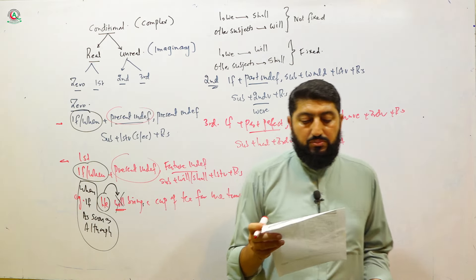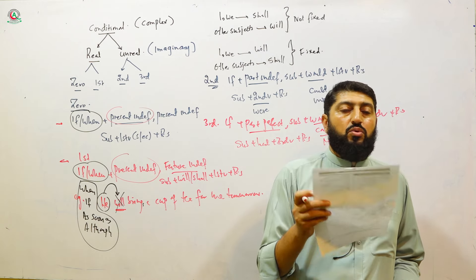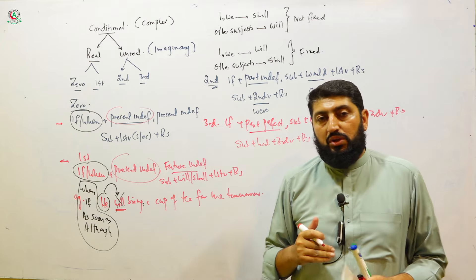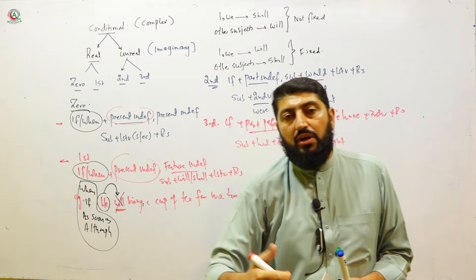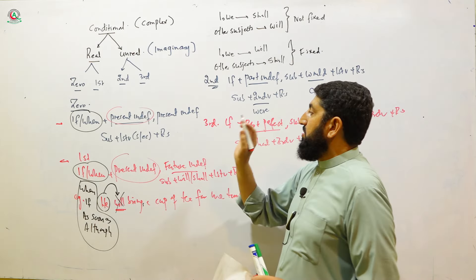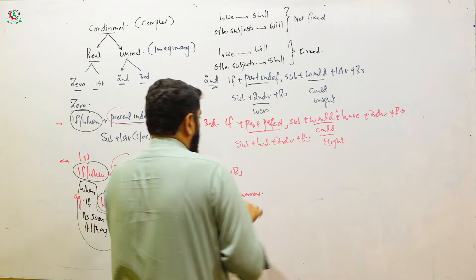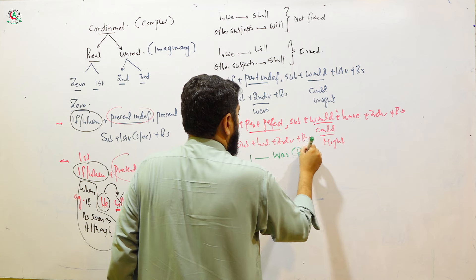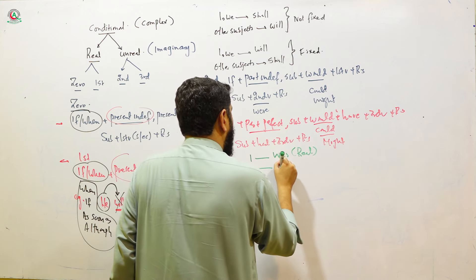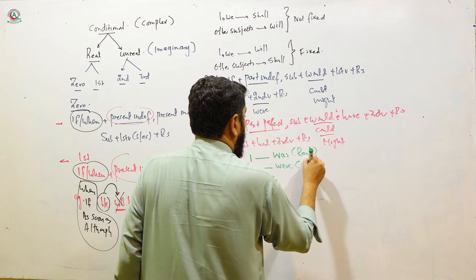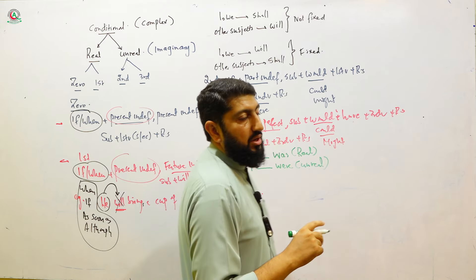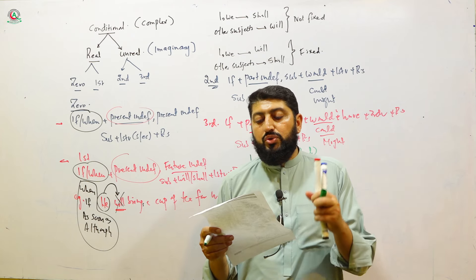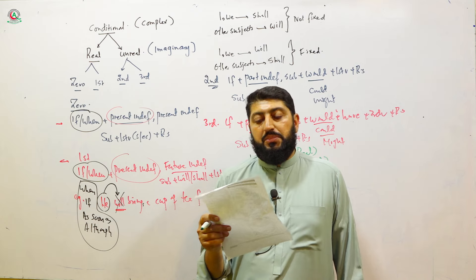Now let's come to the MCQ. The question is: 'If I ___ you, I would not sign the paper.' This is very simple. 'If I were in your place' means this is unreal — imaginary. For imaginary situations, with 'I' we use 'were' (not 'was'). When the situation is real, we use 'was' with I; when the situation is unreal, we use 'were' with I. So here it is unreal, and the option is 'If I were you.' Option number three is the correct one.